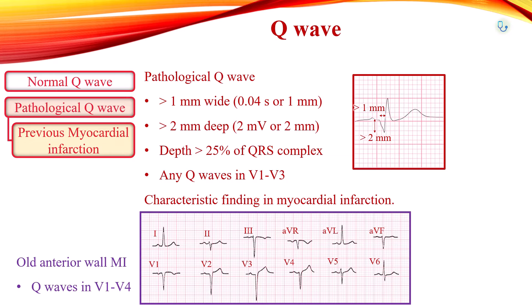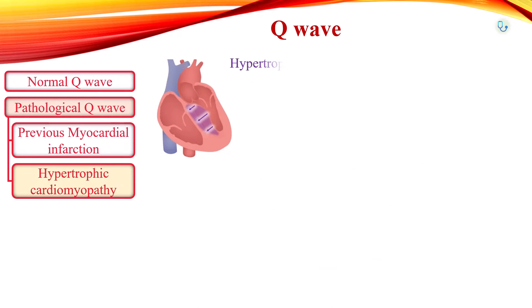If the myocardial infarction is reperfused early with percutaneous coronary intervention, ischemic myocardial tissue can recover and Q-waves may disappear. In all other situations they usually persist indefinitely. Q-waves can also be observed in hypertrophic cardiomyopathy.